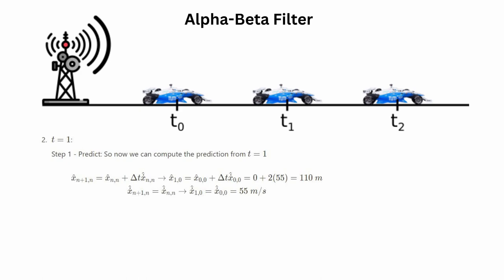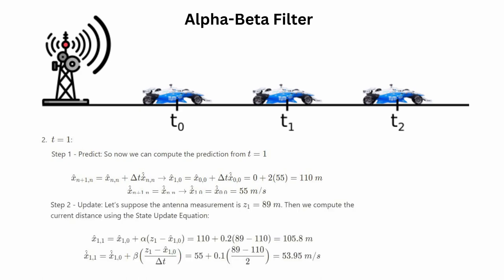The result of the predict step at time instance 1 is 110 meters and 55 meters per second. For the state update step at time instance 1, suppose the antenna measurement is 89 meters. We compute the current distance using the state update equation with constant alpha equals 0.2 and beta equals 0.1. These are your estimates after your state update. If you're still confused, please look at the blog — it's more descriptive and will help much more.